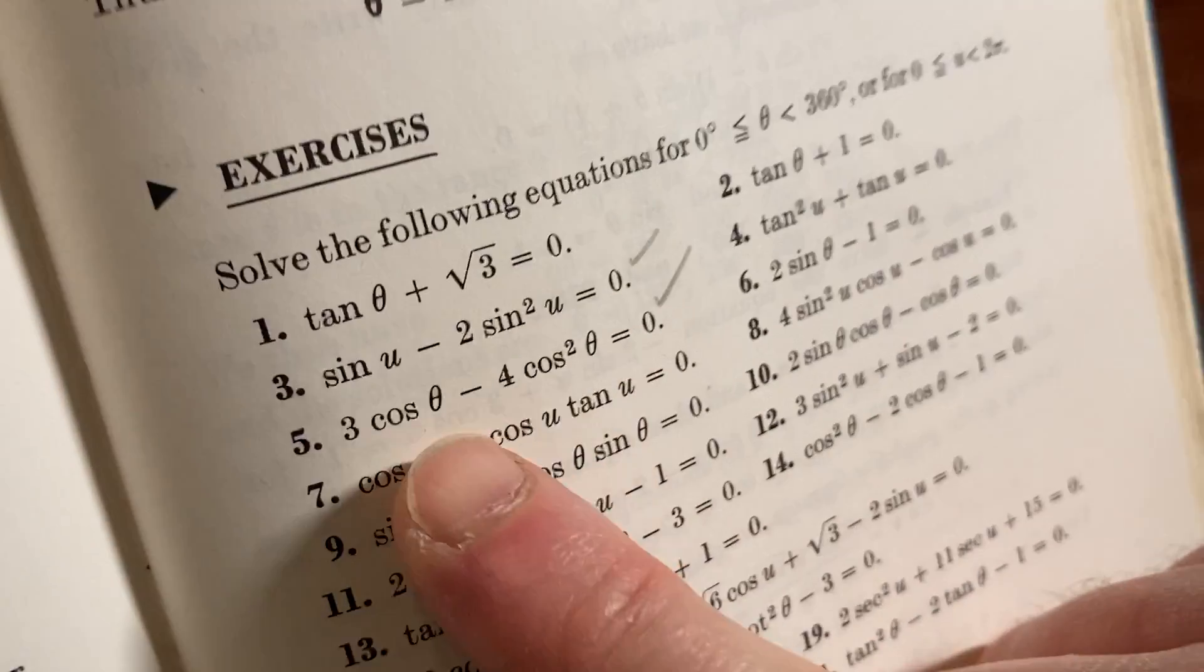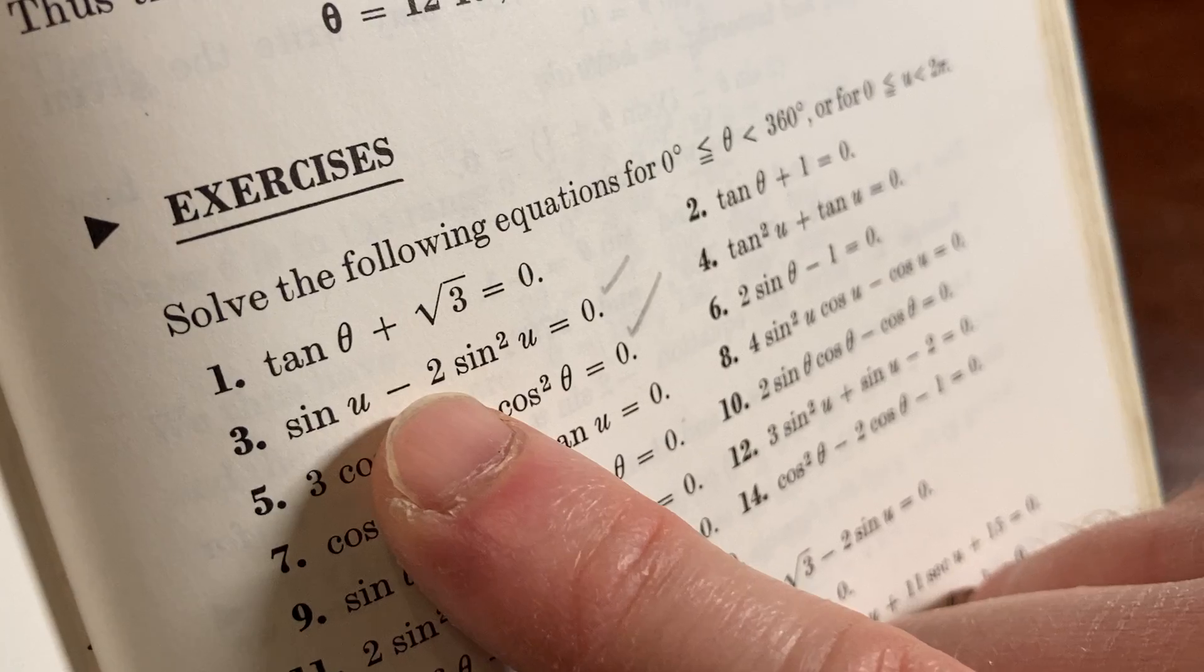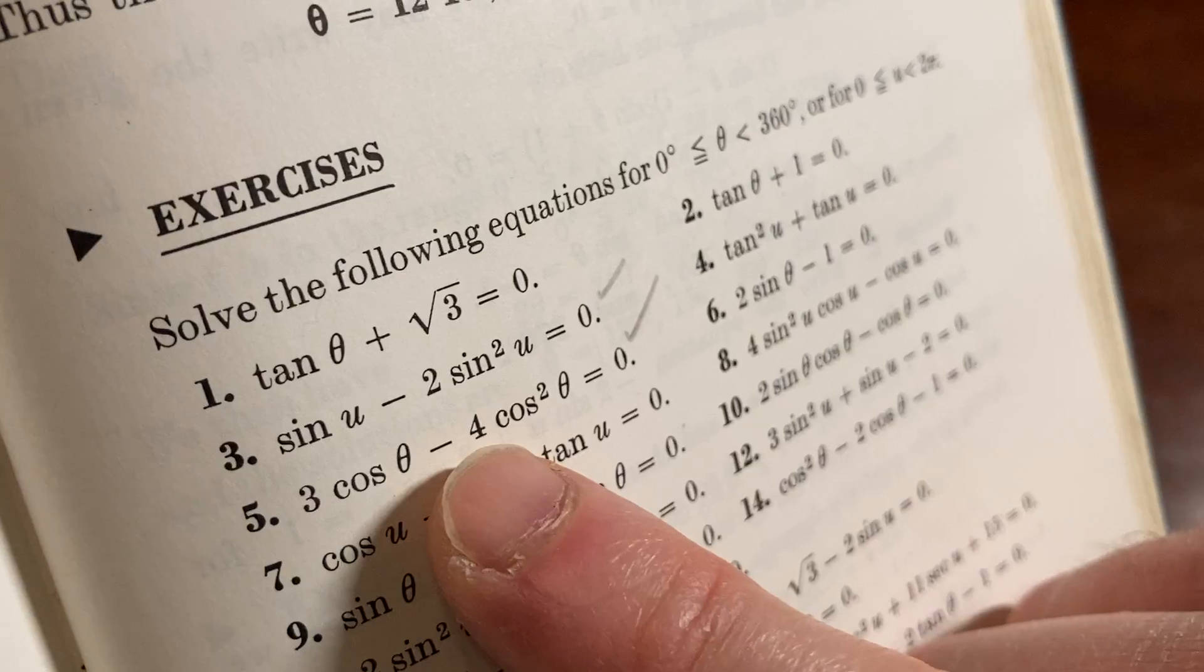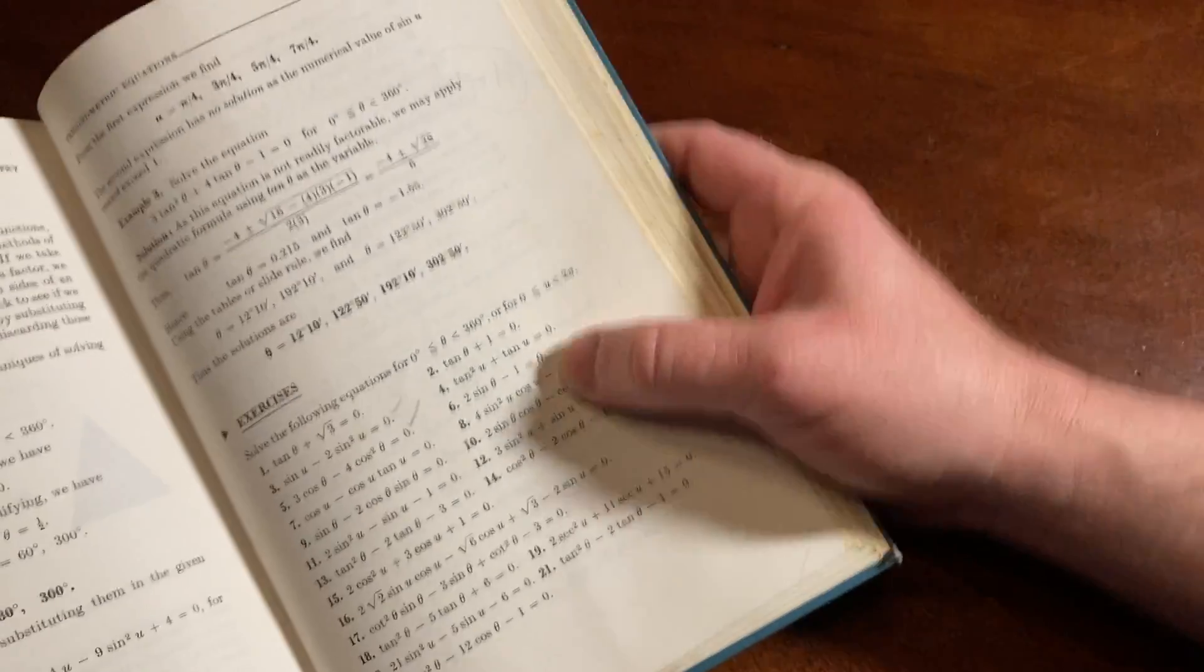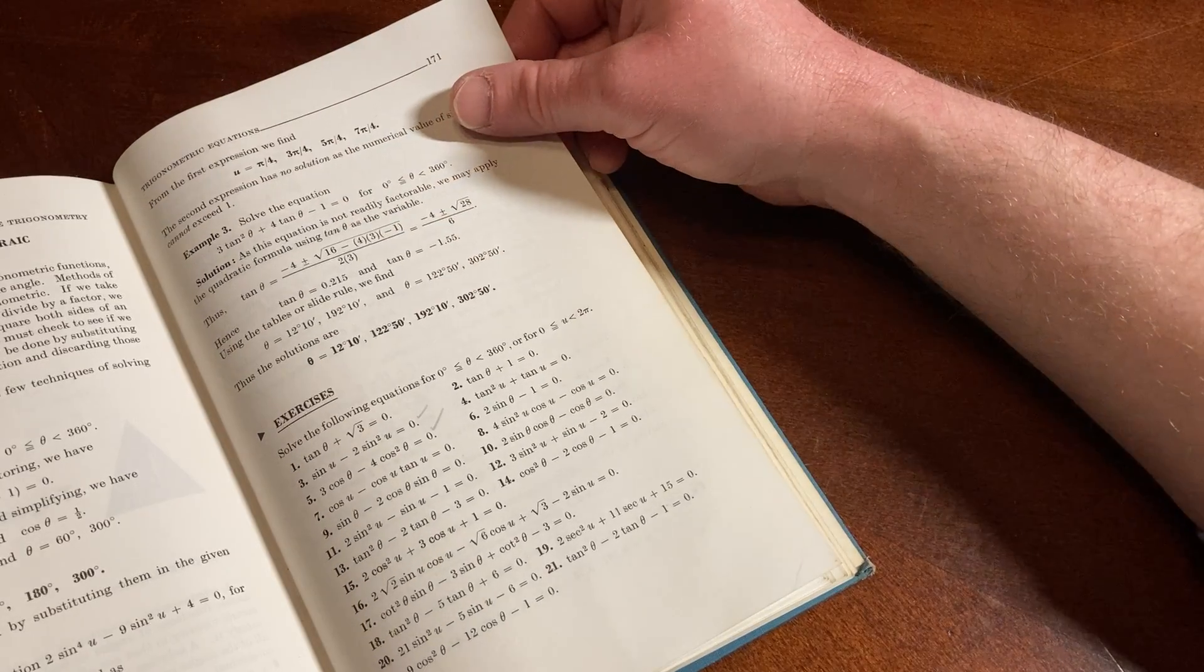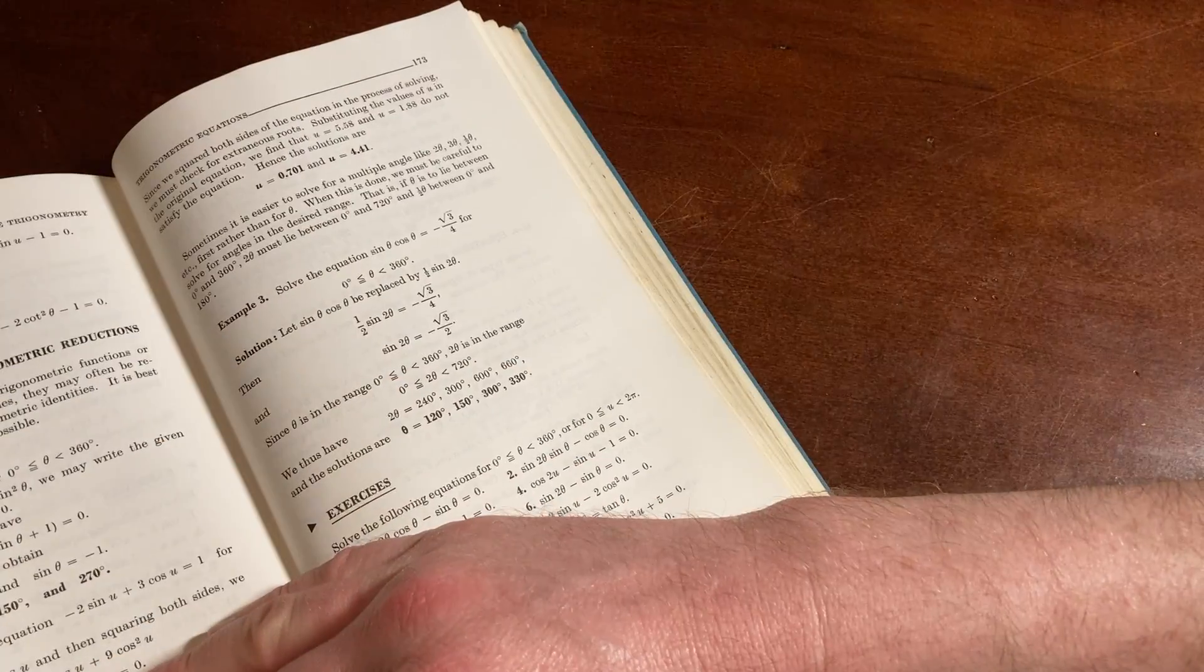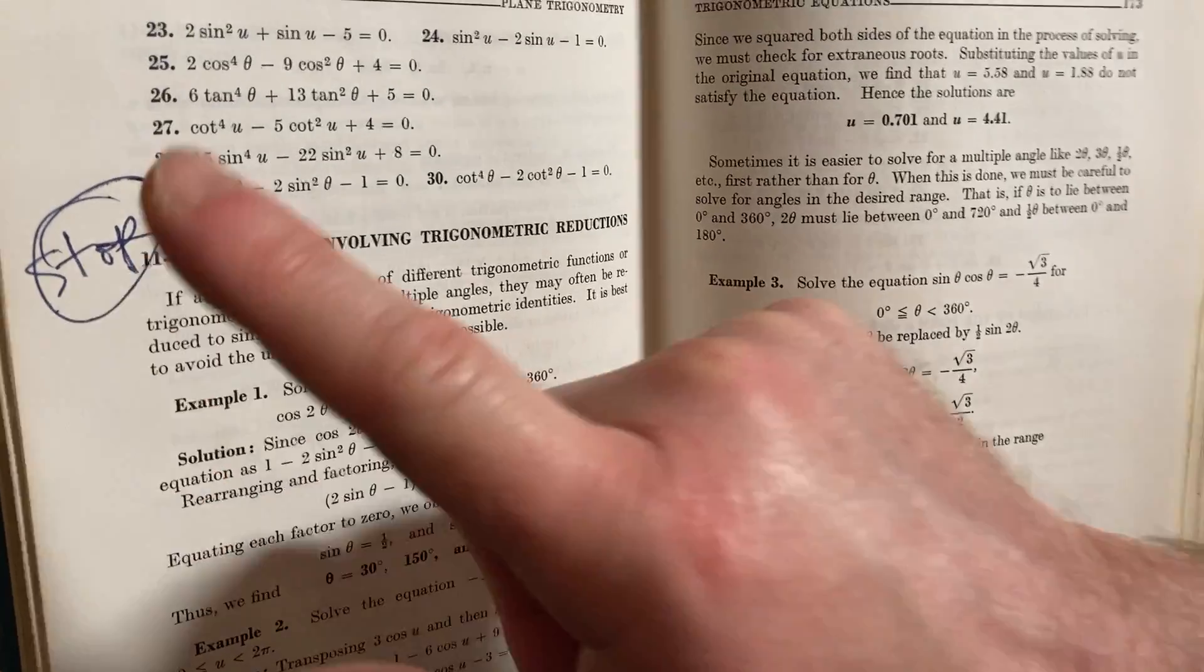They're really nice with the directions. I like these directions. Theta shows up on some of them and then u. So if it's theta, use degrees. If it's u, use radians. Interesting. So they're not giving you a choice. They're telling you if it's theta, use degrees. If it's u, use radians. And that's a lot of problems. It would be really wonderful to have the answers.